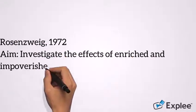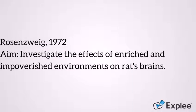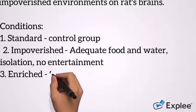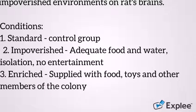Rosenzweig wanted to test this in rats to see how their brains changed when they were put in different types of cages. There were three conditions. One cage was kept as a control, the standard cage, with a normal amount of rats in the colony and adequate food and water.